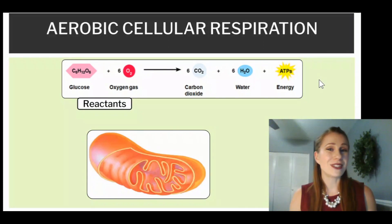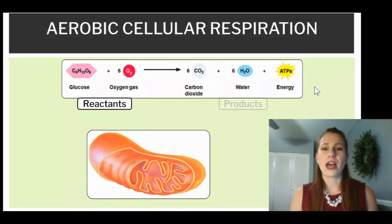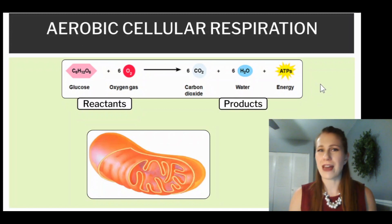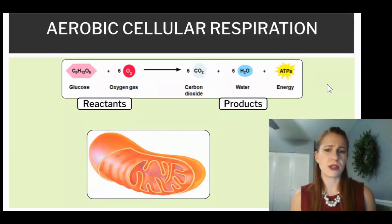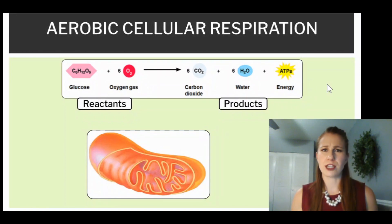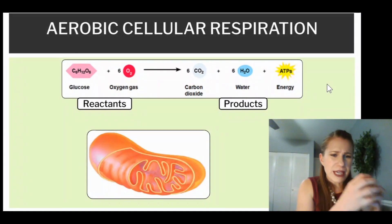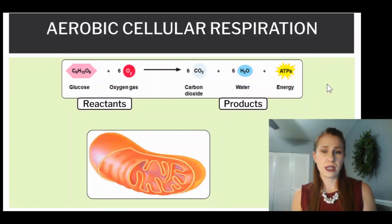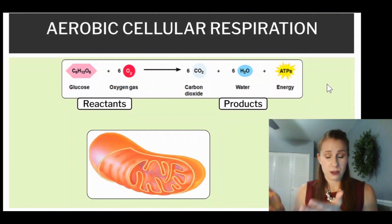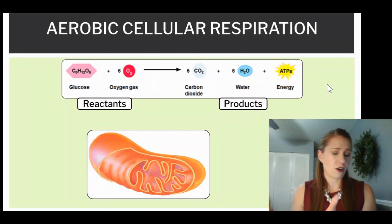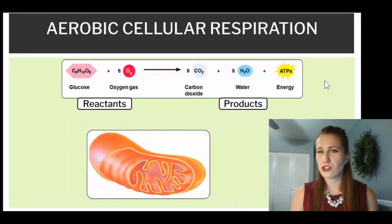Our reactants are what goes into this process — what we start with. And our products are what we end up with at the end. The way I describe it to my students is: if you go to the store to buy a product, is it finished? If I go to a shoe store, I don't want to make my own shoes — I want to buy shoes from a box that are all laced up and ready to go. That's a product. It's finished.